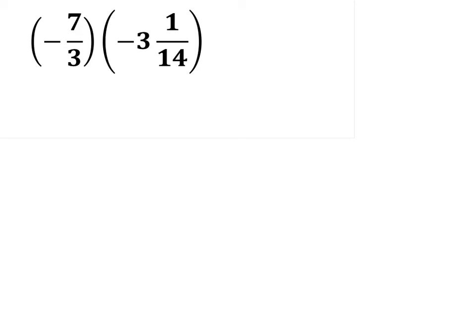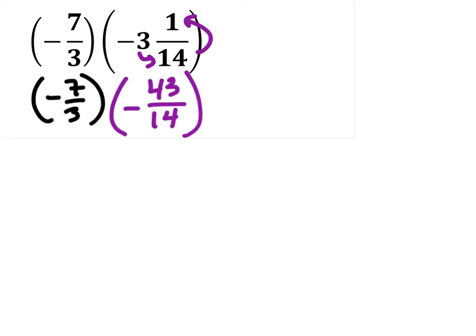So to change this mixed number into an improper fraction, I've got 3 times 14 plus the 1. And that would give me a 43 over 14. We keep the negative with this because its total value was negative.